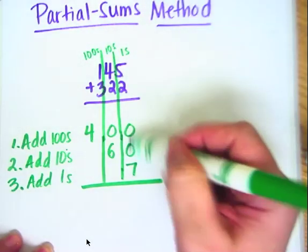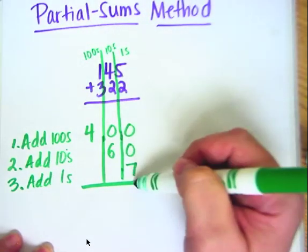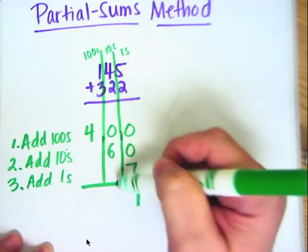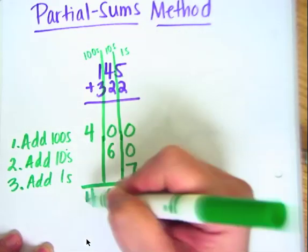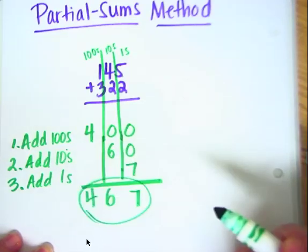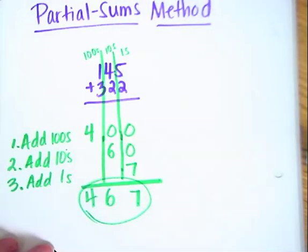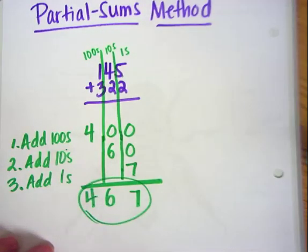Then we can just go down and see what digits there are. Over here we have a 7. Over here we have a 6. And over here we have a 4 in the hundreds. So your answer is 467. And that's how we use the partial sums method.